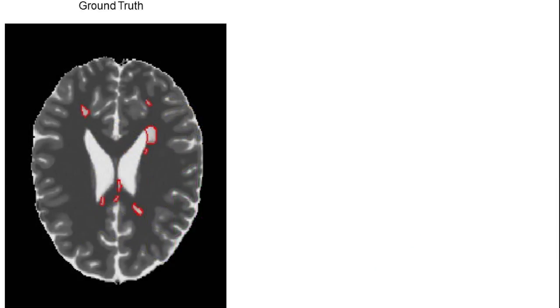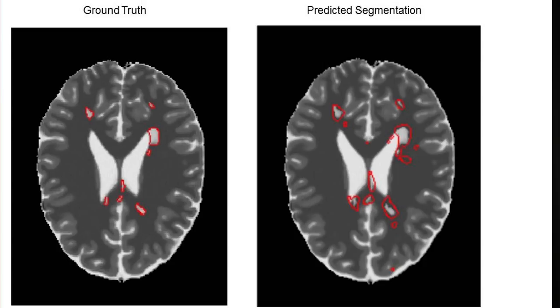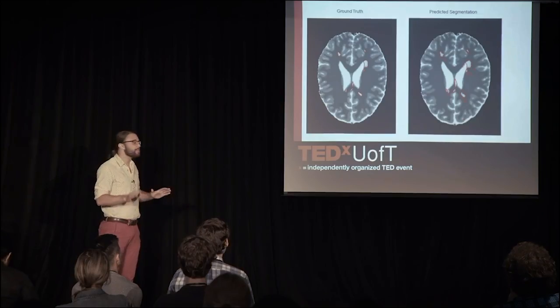Let's see how well this turns out. This is a picture of the ground truth — the correct answer, what we want the algorithm to recreate. And these are the results we get. It turns out it doesn't do a very good job. There's a lot of over-segmentation and a lot of false positives. My supervisor, Dr. Ha-Mei Zhu, and I looked at this critically and thought it must be looking at too much information at once, resulting in too many confusing factors.